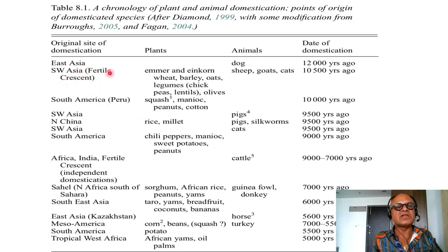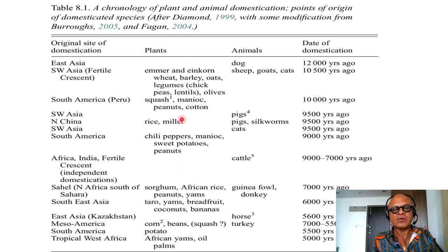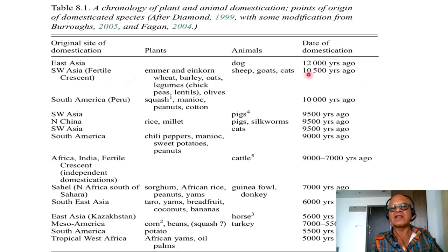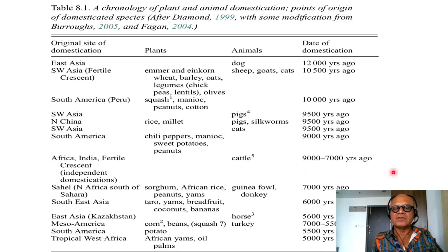Regions and original sites of domestication, starting with Asia, the Americas, China, Africa, India, Fertile Crescent, Sahel, South Asia, East Asia, and so on — covering the range of plants and animals over timelines we have already discussed. East Asia and Southwest Asia — the Fertile Crescent — come up earlier than other regions, consistent with other maps we have seen, though the timelines are not always perfectly matching and are somewhat approximate.